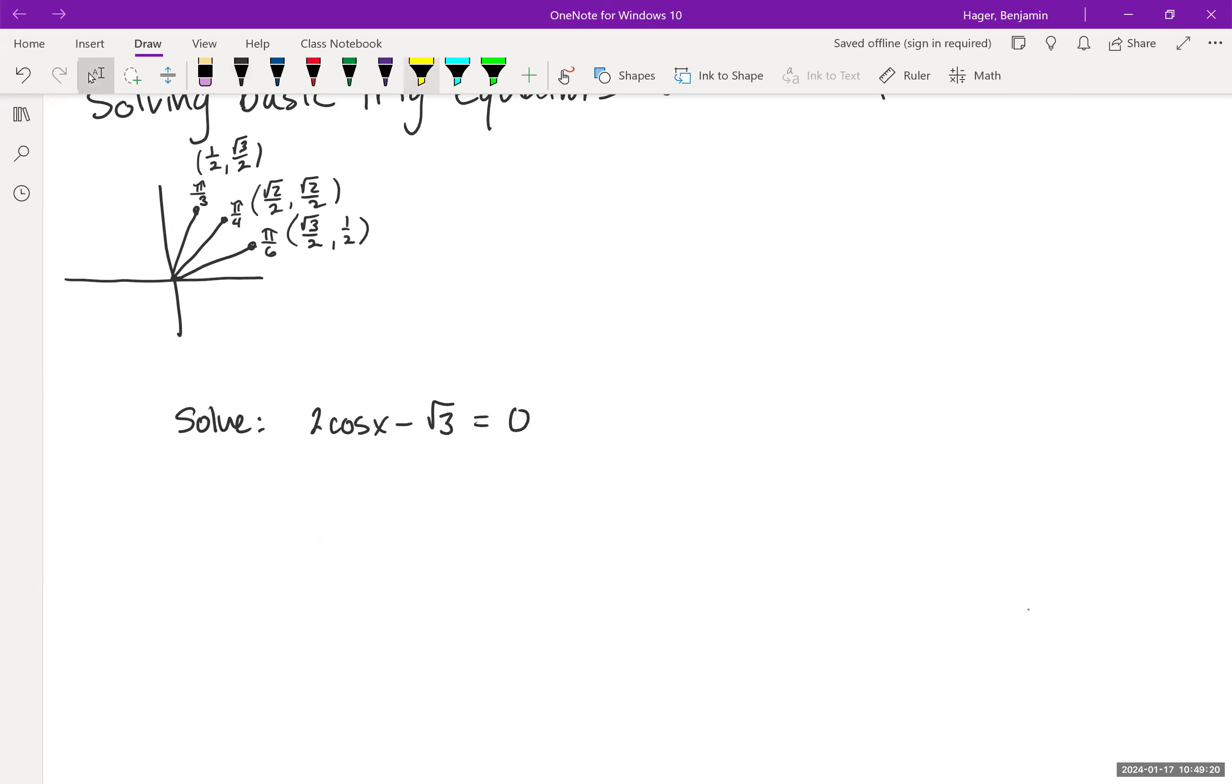Let's suppose we were asked to solve 2cos(x) - √3 = 0. When you're solving a trig equation, the goal is always to isolate the trig function. Ultimately we're trying to find angle x. We start by isolating the trig function. Adding √3 to the other side, then dividing both sides by 2, we get cos(x) = √3/2.